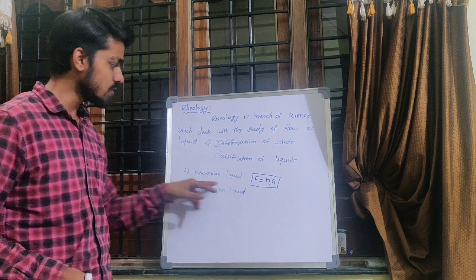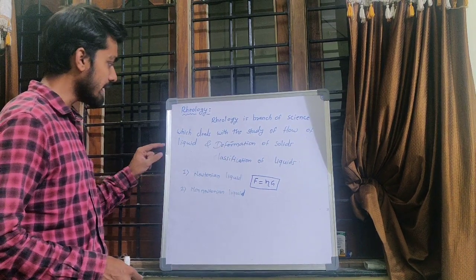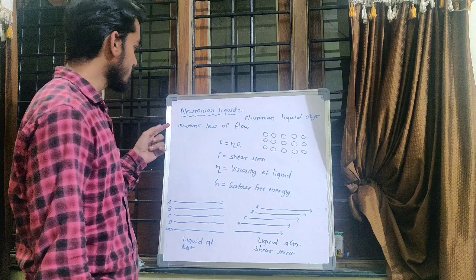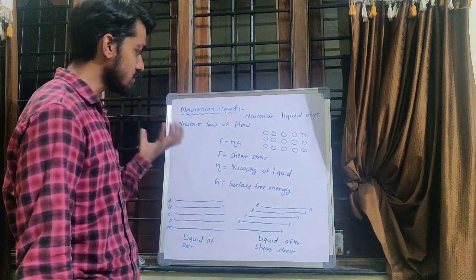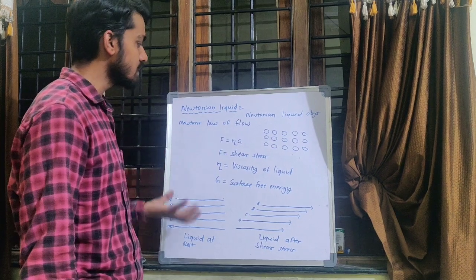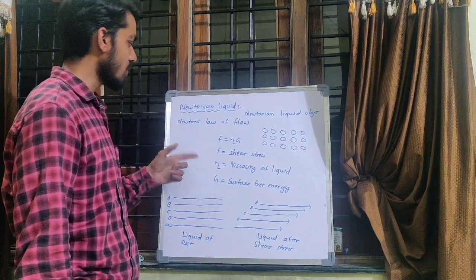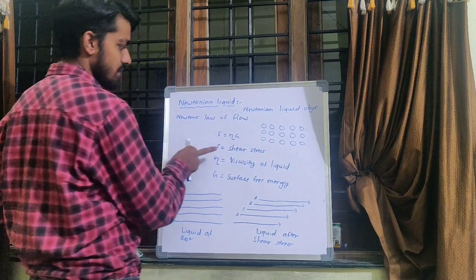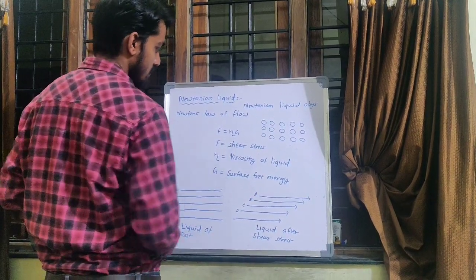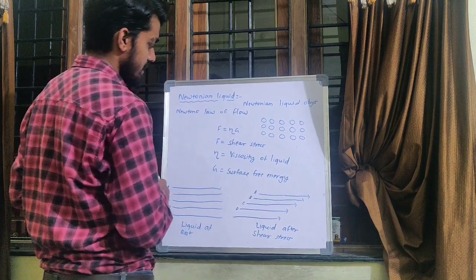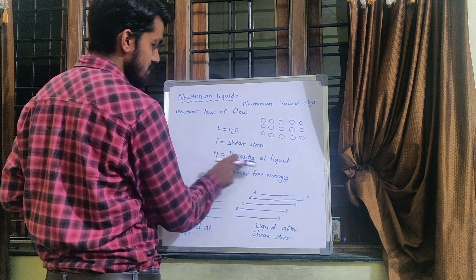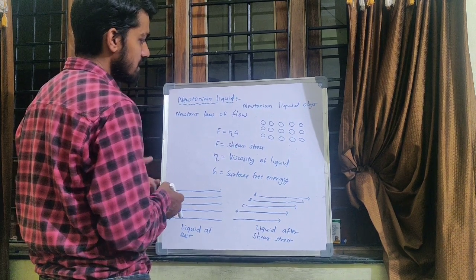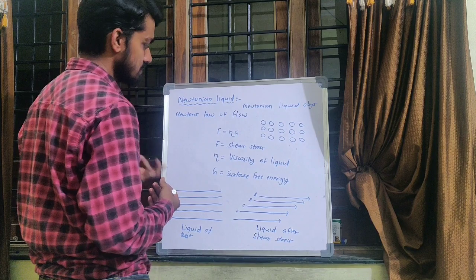In today's lecture we are going to discuss the Newtonian liquid. A Newtonian liquid obeys Newton's law of flow, given by F = η·G. F is the shear stress, η (eta) is the viscosity of the liquid. Viscosity of a liquid is the liquid's resistance to flow — that resistance is called its viscosity.